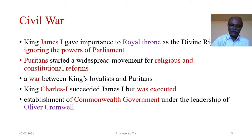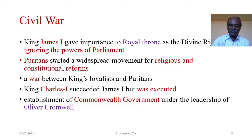Civil War: The entire period of Puritan Age was dominated by civil war. The people of England were divided into two groups — one loyal to the king and the other opposed to him. The crisis began when King James I came to the throne in 1603. He gave importance to the royal throne as a divine right, ignoring the powers of Parliament. The Puritans started a widespread movement for religious and constitutional reforms. There was a war between the king's loyalists and Puritans from 1642 to 1649.